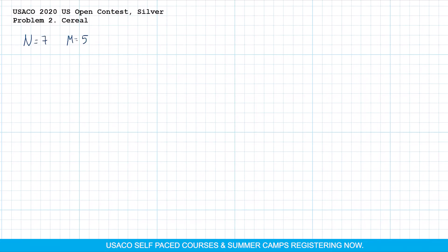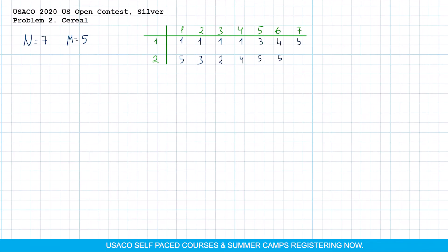To solve this problem, let's look at a more complicated example. Let's say we have 7 cows, so N is equal to 7, and 5 types of cereal. The cows' selections are shown in the table. We will also create an array where for each type of cereal we write down the number of the cow that selected it. We are going to start the selection process from the last cow and move to the first cow, putting the answers into a temporary array and printing them at the end.